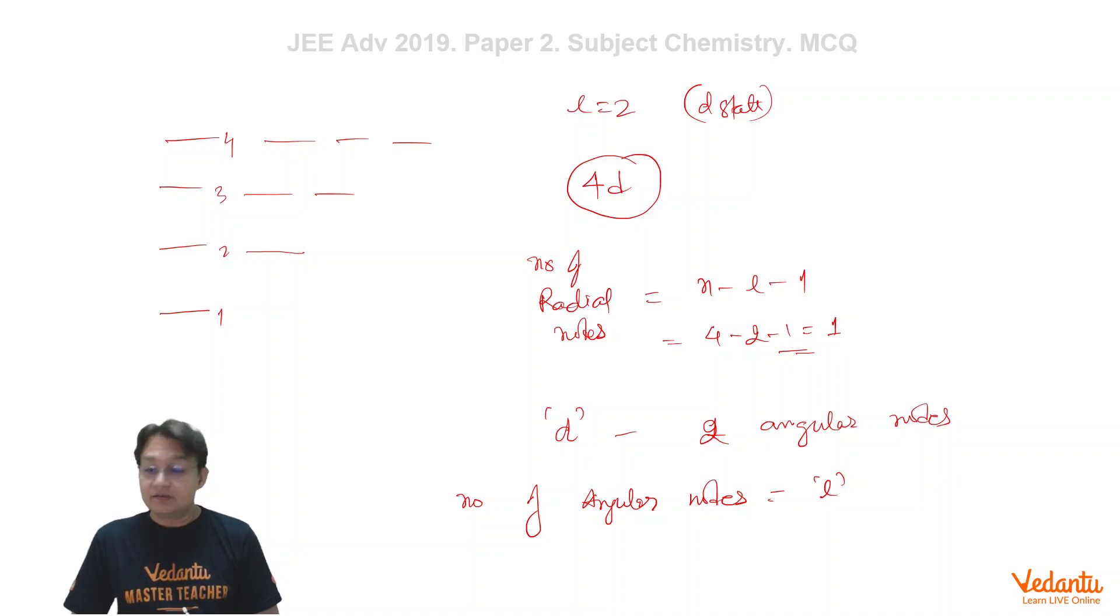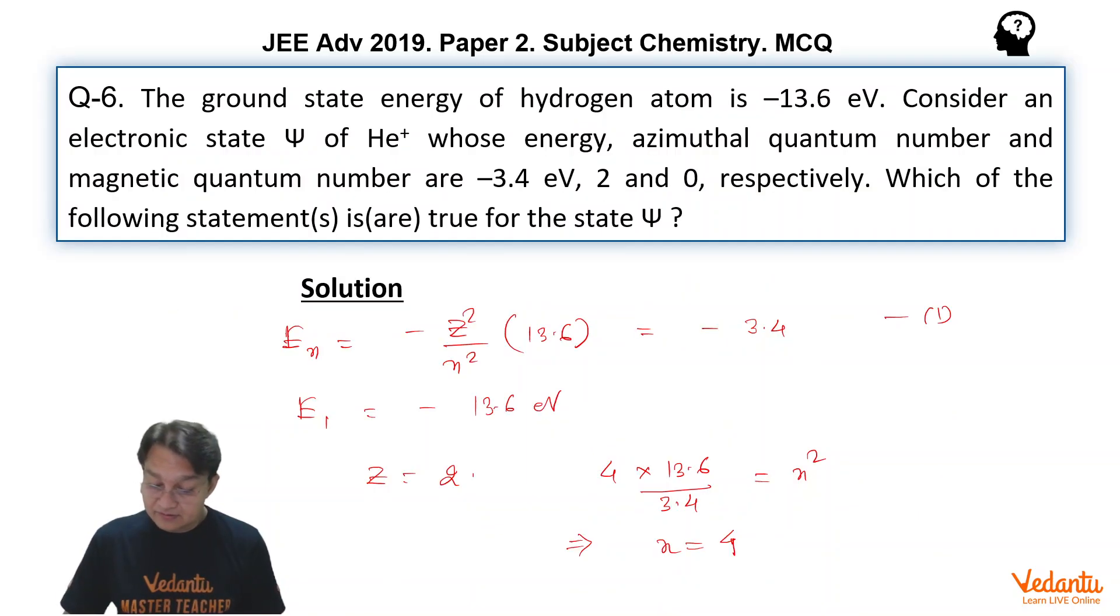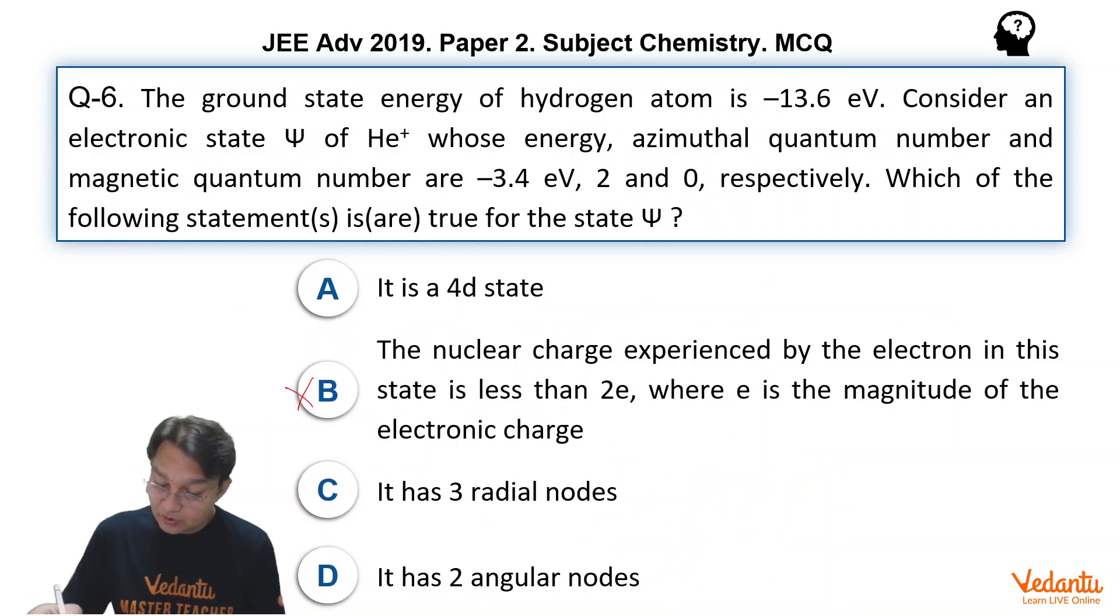So if we see this, our answer is: it is a 4D state, correct. It has three radial nodes, incorrect. It has two angular nodes, of course it is also correct. So answer is A, C and D.